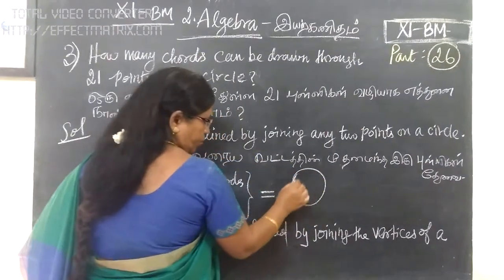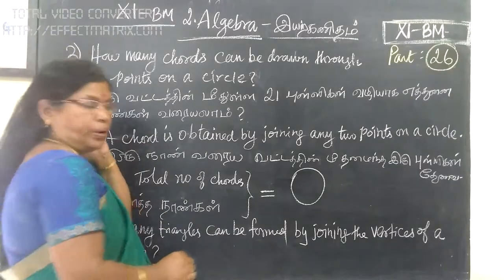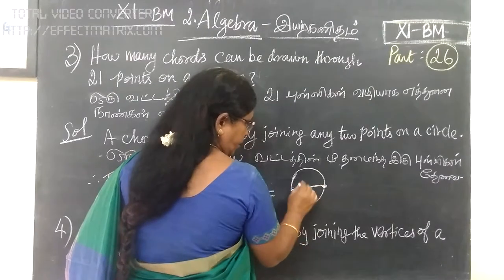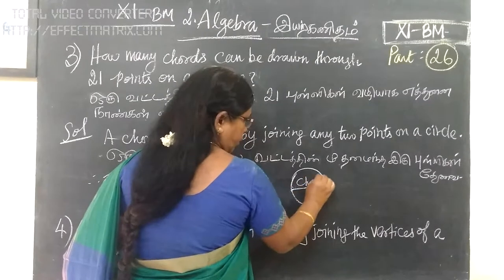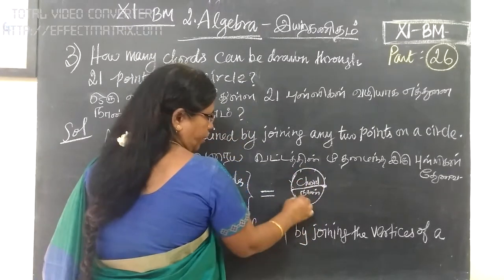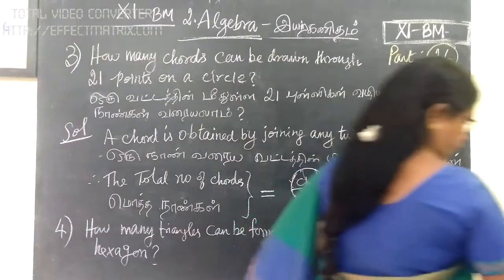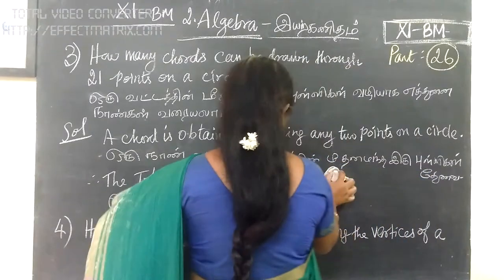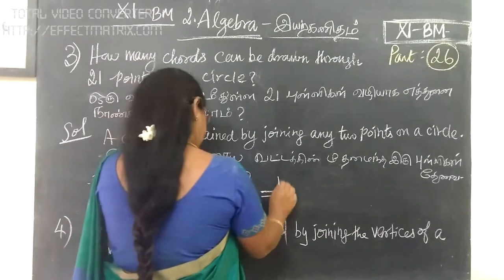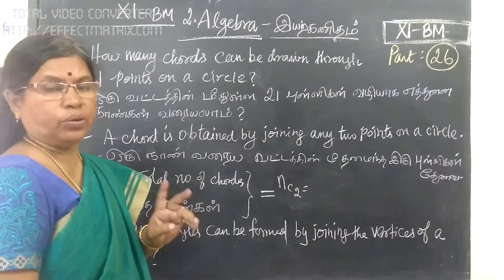One circle has 21 points. You can draw chords through these points — 2 points are needed per chord. The total number of points is 21.